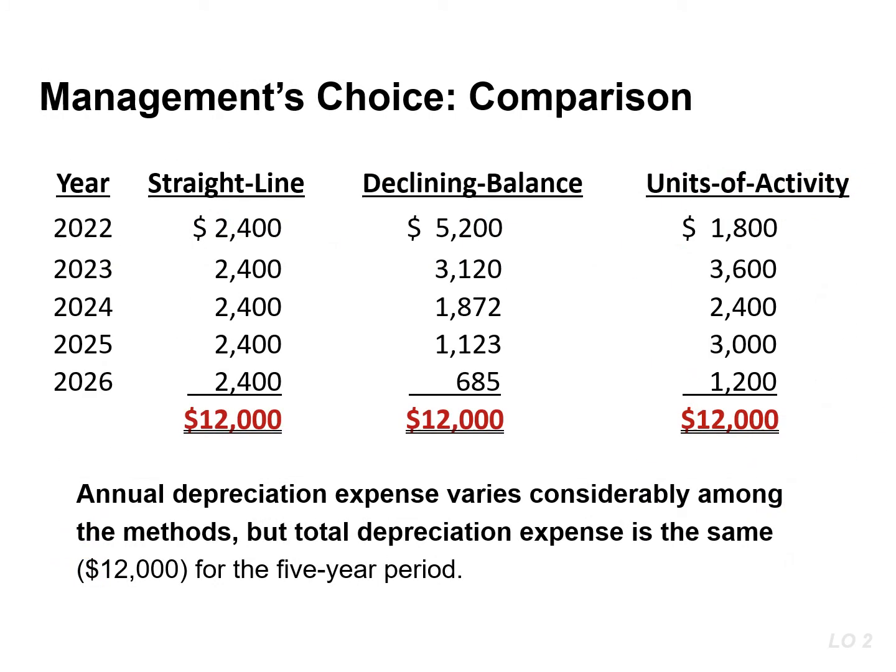Annual depreciation expense varies considerably among these three methods, but total depreciation expense is the same for the five-year period. Straight line will result in a constant amount, whereas declining balance will result in a decreasing amount, and units of activity or units of production will result in a varying amount.